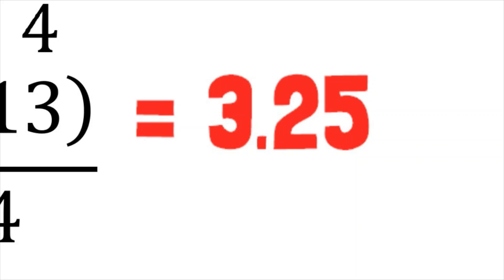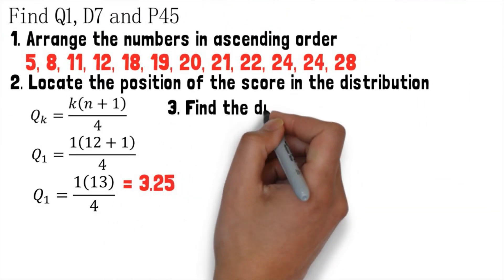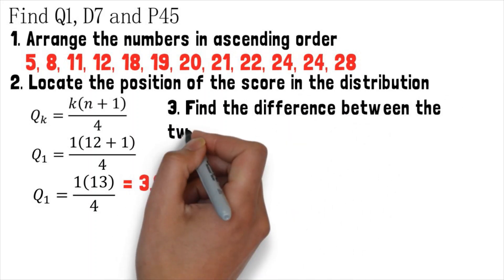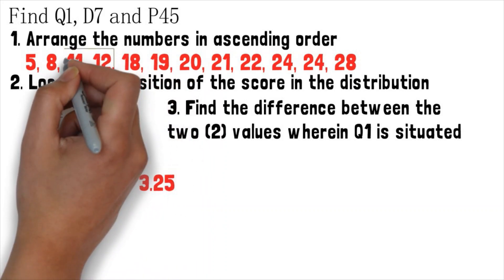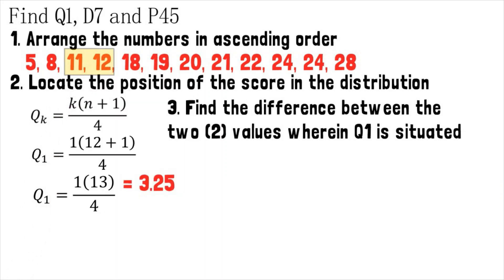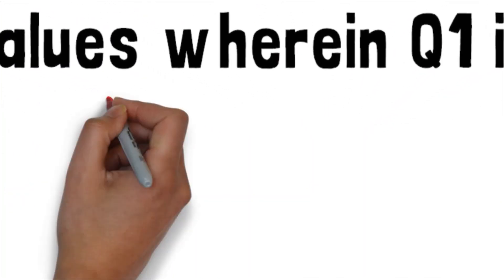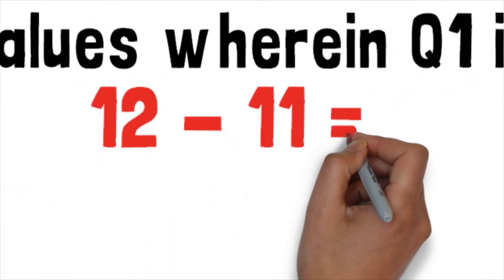After that we do linear interpolation in step 3. What we need to do is find the difference between the two values wherein Q1 is situated. If the value of our Q1 is 3.25, we'll get the third and fourth number since 3.25 lies between the third and fourth number. Since we need to get the difference between the two, we'll subtract the two numbers. That is 12 minus 11 which equals 1.